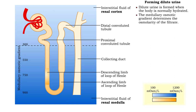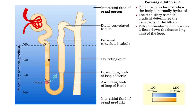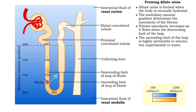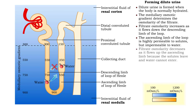The medullary osmotic gradient determines the osmolarity of the filtrate. Filtrate osmolarity increases as it flows down the descending limb of the loop. The ascending limb of the loop is highly permeable to solutes, but impermeable to water. Filtrate osmolarity decreases as it flows up the ascending limb because the solutes leave and water cannot enter.